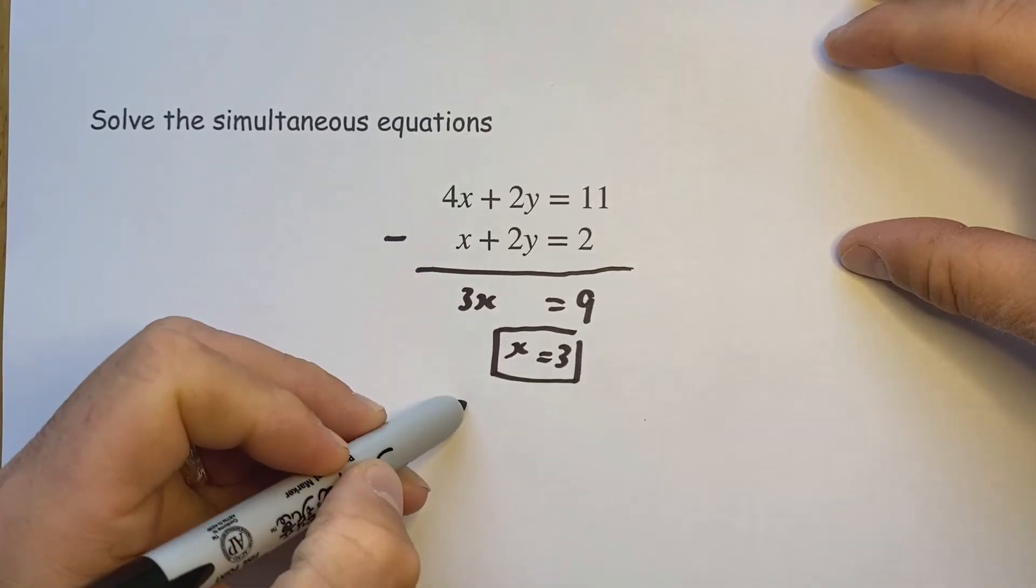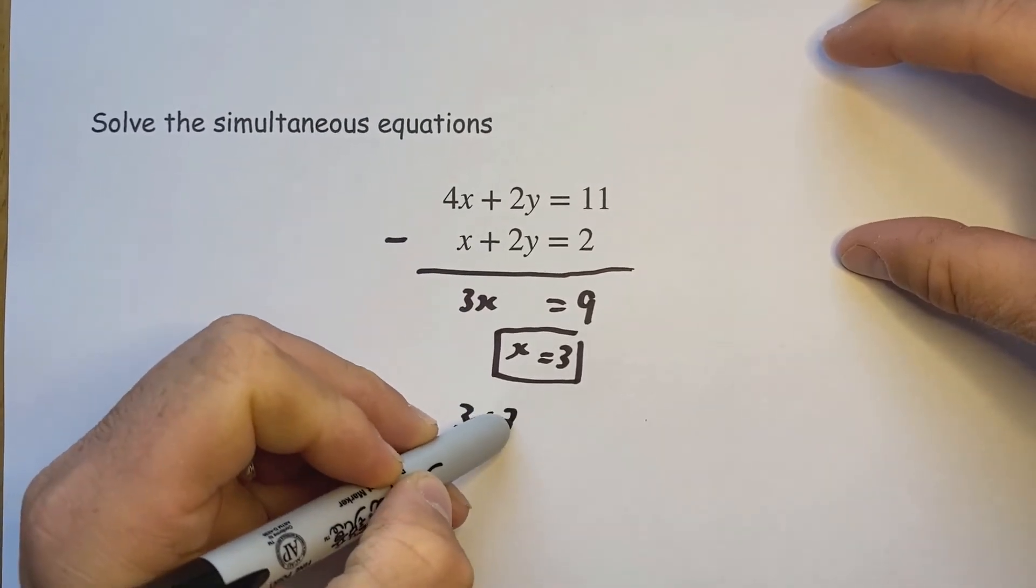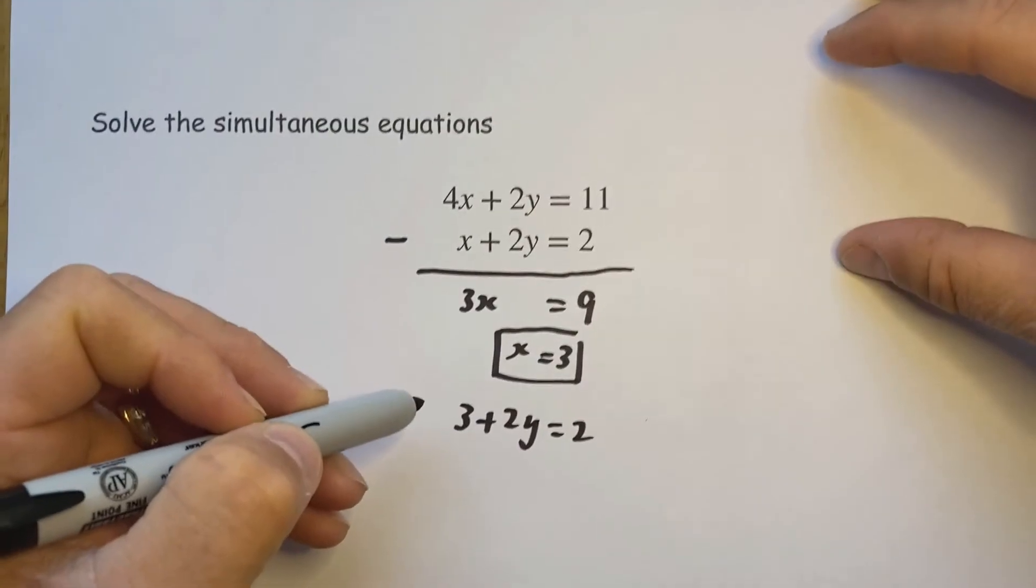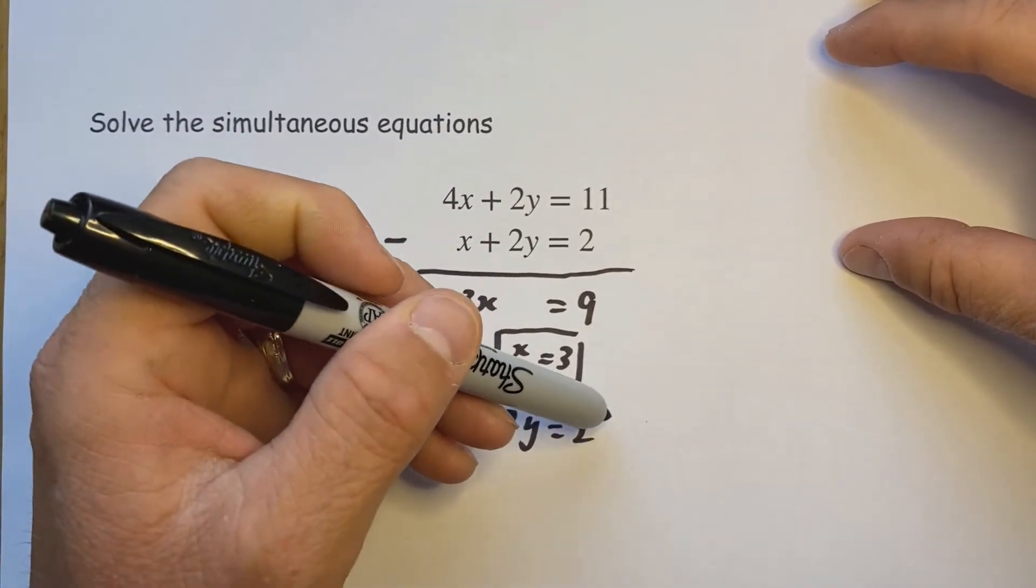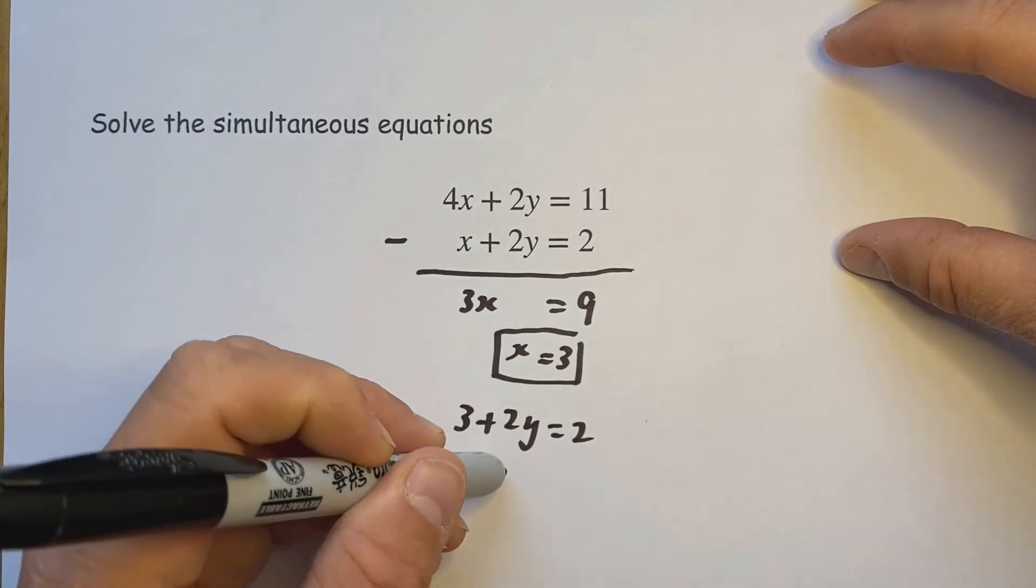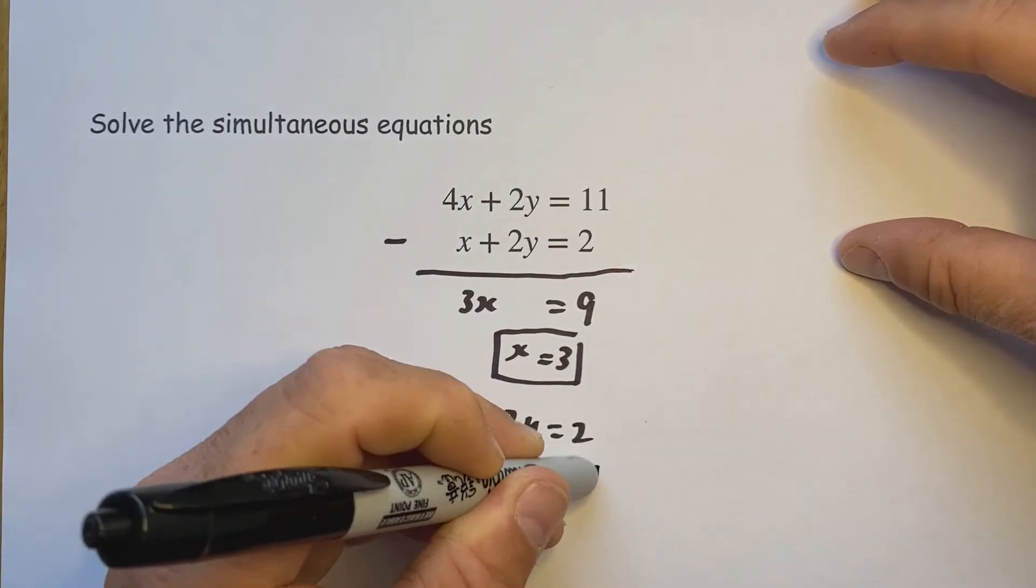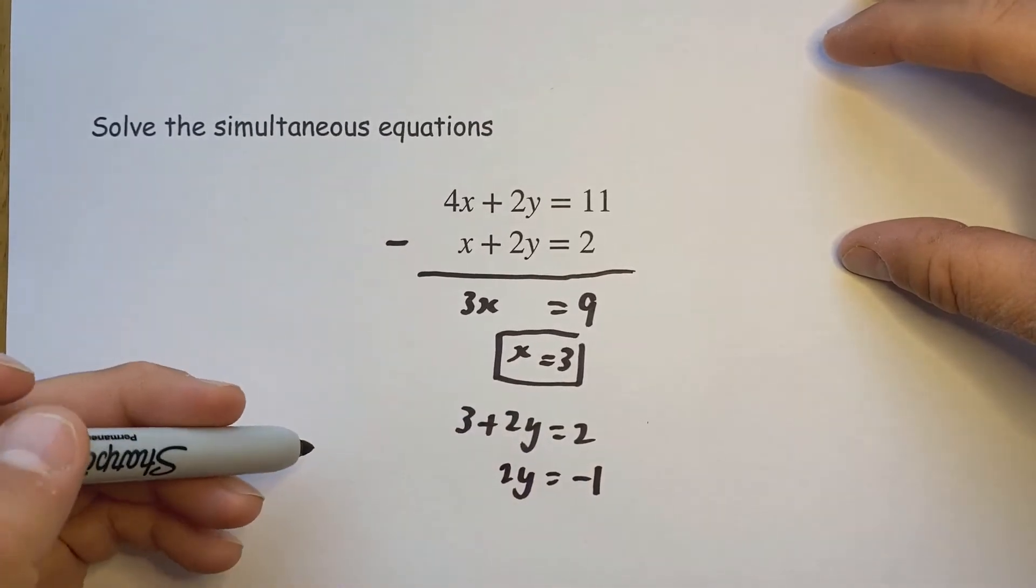x is 3, add 2y equals 2. Move the 3 across to the side, becomes a take 3, so 2y is equal to minus 1 because 2 take 3 is minus 1.